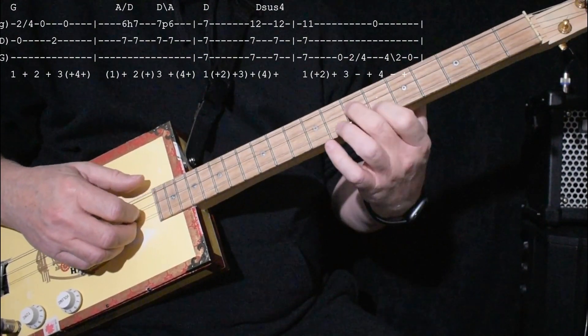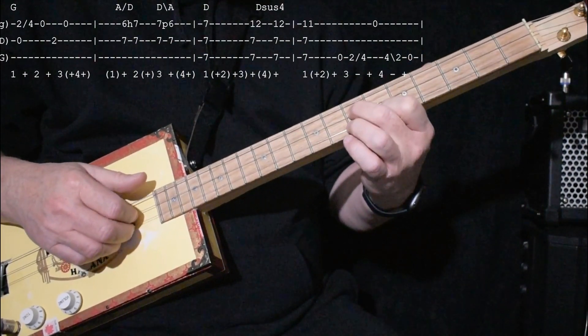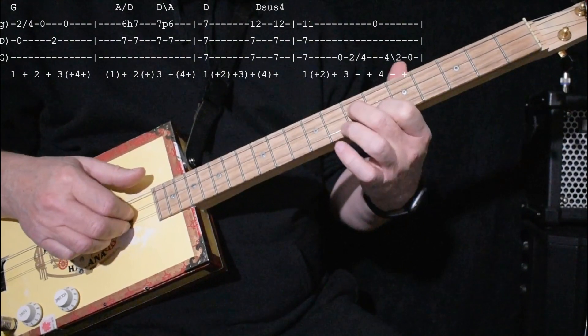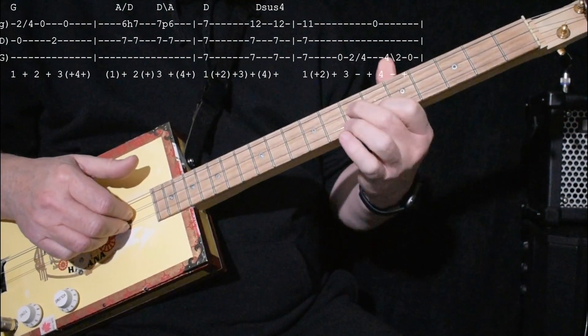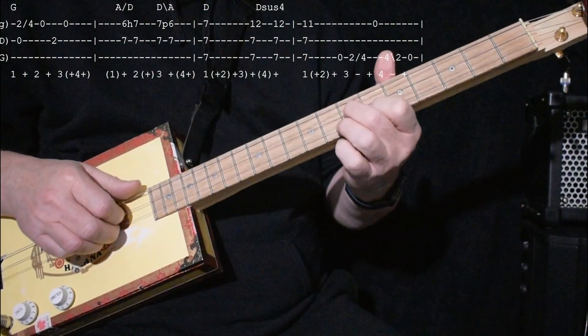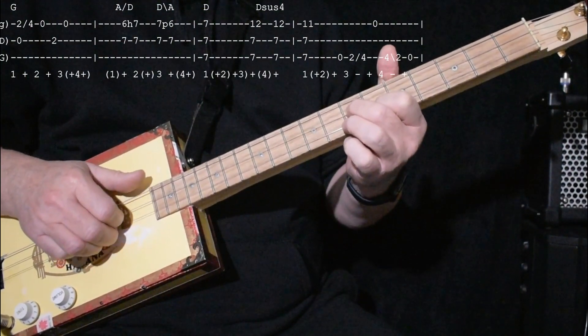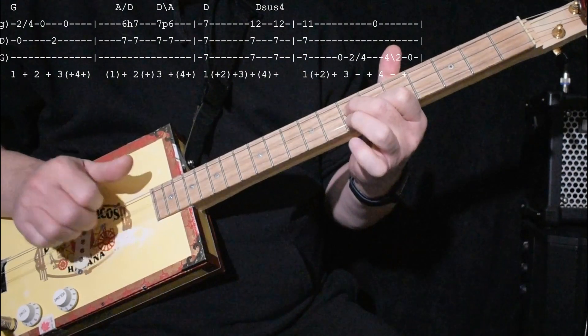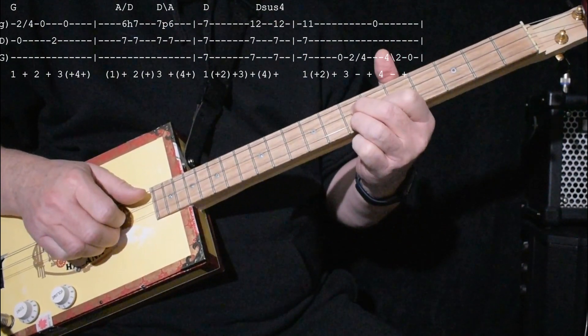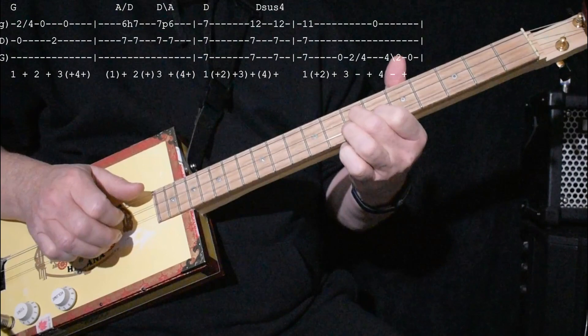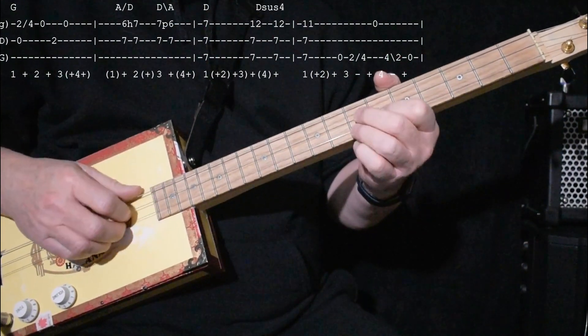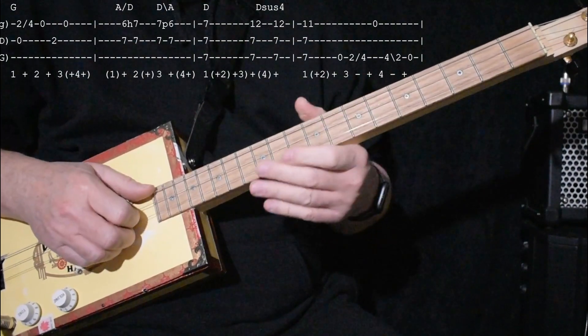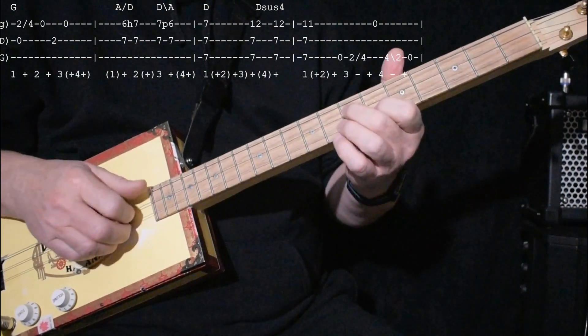Then we go to an A chord. We're going to do it up here. Partial A. And we're going to hammer on. First finger's on 6. Second finger's on 7. And we're going to hammer on to 7 on the first string. And it's actually pretty sparse. It's just hit those two notes and hammer and then hit it again and pull off. When you're playing this you might want to add in a few more stuff if you're by yourself, but this is what's on the record.